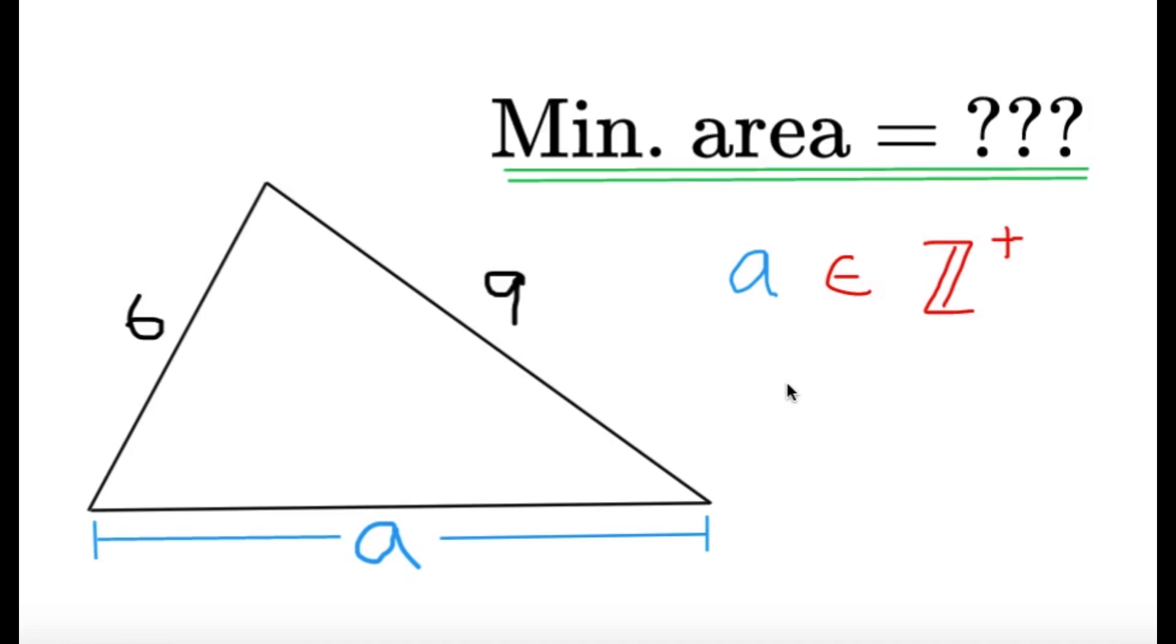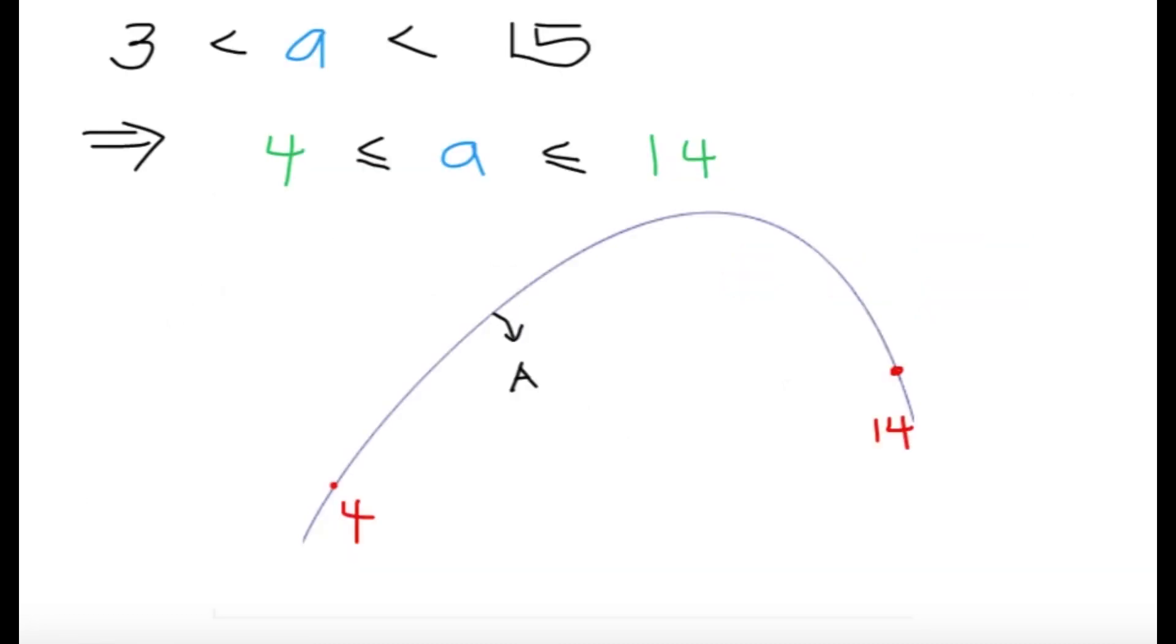Now, first of all, there are only finitely many values of a because of the triangle inequality theorem. Since we have a side length of a, 6, and 9, a must be between absolute difference of 6 and 9, which is 3.